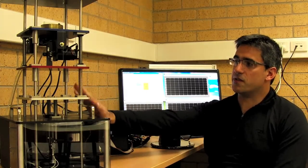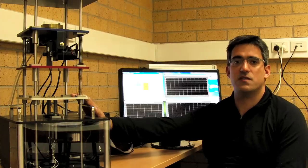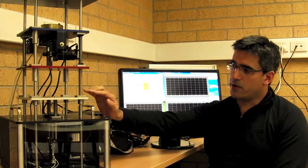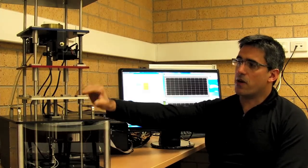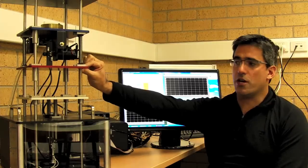This device here represents an active suspension system of a car. So the silver plate here simulates the motion of the road. The red plate here simulates the mass of the wheel.